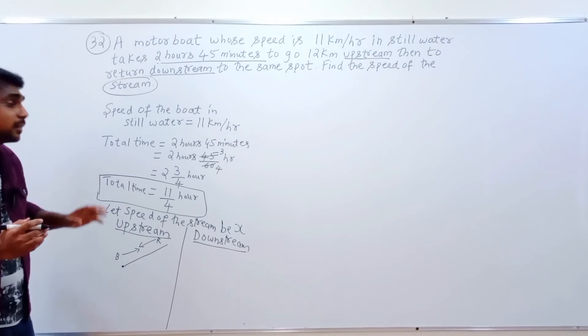It's a river. The boat speed is 11 km/hr. Going upstream, the effective speed is 11 minus x. Going downstream, the effective speed is 11 plus x. This is upstream and this is downstream.